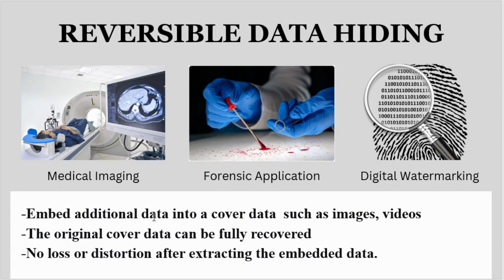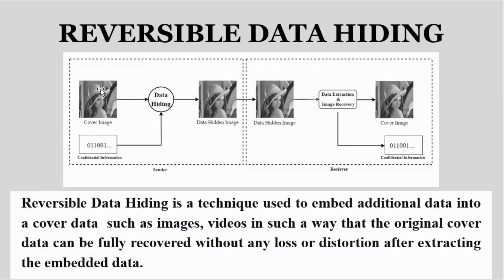Reversible data hiding is a recent research field of information security for secured digital data transmission. It is a technique for embedding data into a cover medium in a way that the original cover image can be perfectly recovered after the embedded data is extracted. Here in the image, you can see the sender sending confidential information by embedding data into a cover image — the data-hidden image looks the same as the original. At the receiver end, data is extracted and the image is recovered. We get both the confidential data and the original medium without any distortion or loss.